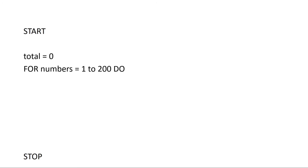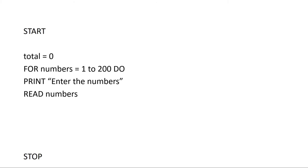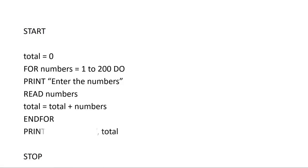Next we write our for loop. The variable 'numbers' will be used to store the count, so you'll have: FOR numbers = 1 TO 200. Inside the loop we ask the user to enter the numbers, accept the numbers, and then find the total: total = total + number. Remember — cumulative total equals cumulative total plus variable. Total will be storing the total of the 200 numbers. Afterwards we end the for loop and print the results: 'The total number is' followed by the variable total.